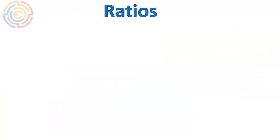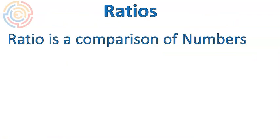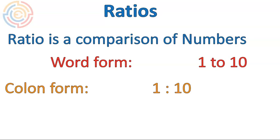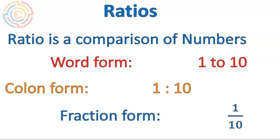First of all, ratios. A ratio is a comparison of numbers. It can be written in three different forms. Usually a word form is writing it like this — a one to ten ratio is a comparison of one something to ten something else's. Colon form where you have the colon in between the numbers. And then fraction form, which is the most common form of writing ratios. The numerator is the first number and the denominator is the second number.